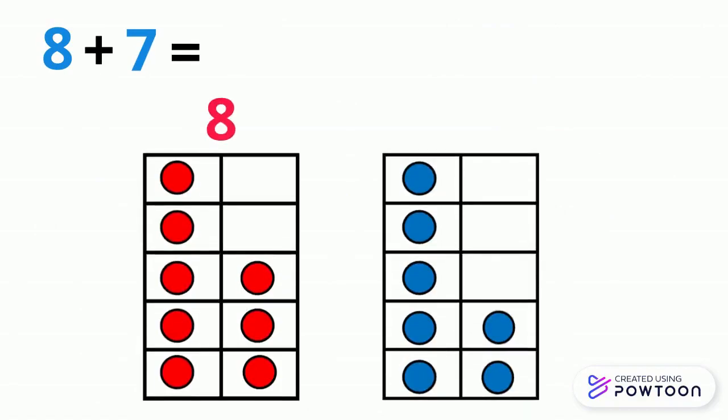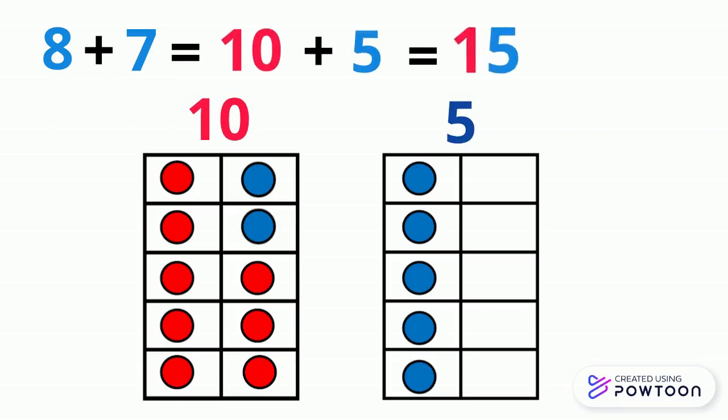There are 8 red circles and 7 blue circles. What did 7 give to 8? 7 gave 8 2, 7 became 5 and 8 became 10. So, 8 plus 7 equals 10 plus 5 equals 15.